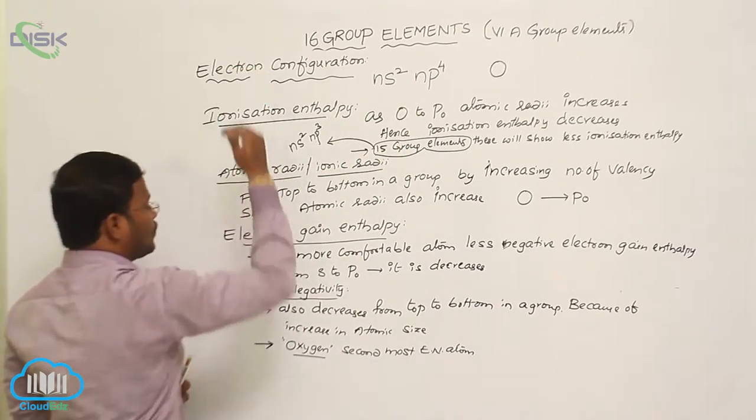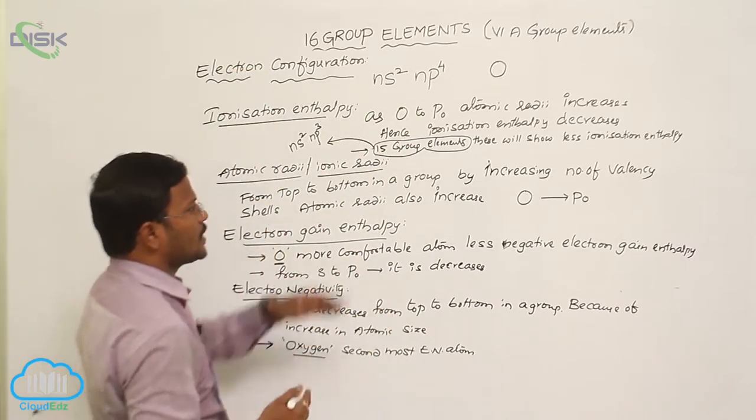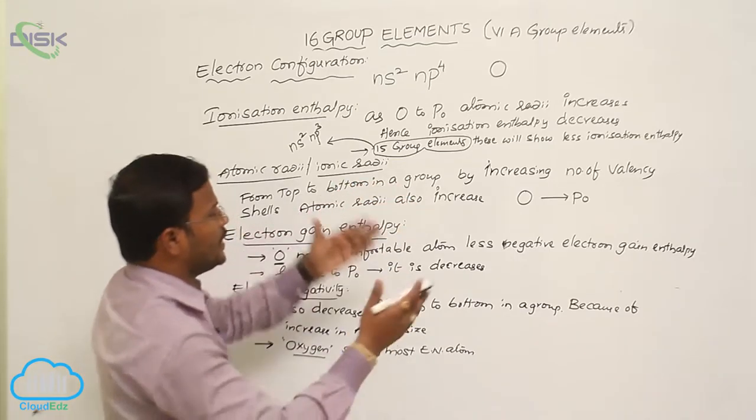Atomic radii: from top to bottom, by increasing number of shells, atomic size or atomic radii increases.